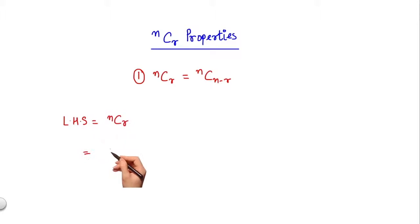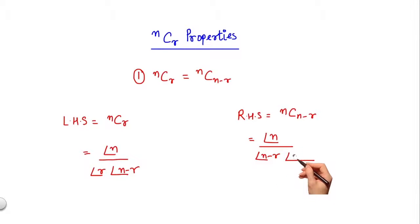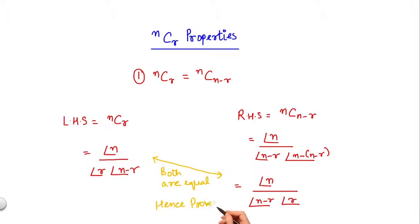The left hand side is NCR which equals N factorial divided by R factorial N minus R factorial. While the right hand side is NC(N-R) which is N factorial divided by N minus R factorial N minus N minus R factorial. Solving for this, I get N factorial divided by N minus R factorial R factorial. Therefore, the left hand side and the right hand side are equal, hence proved.